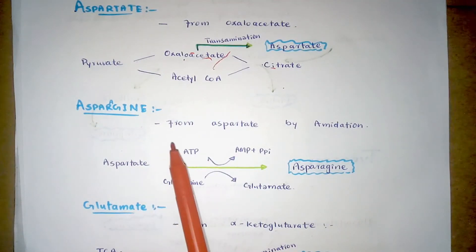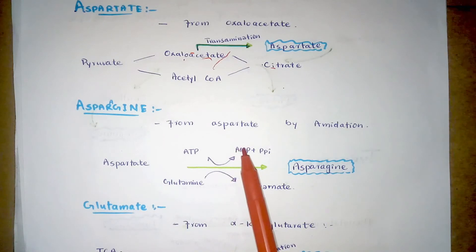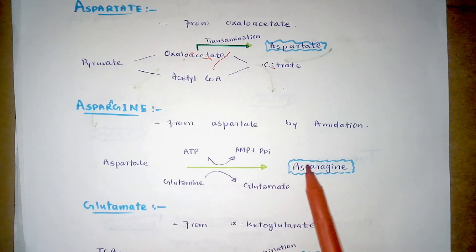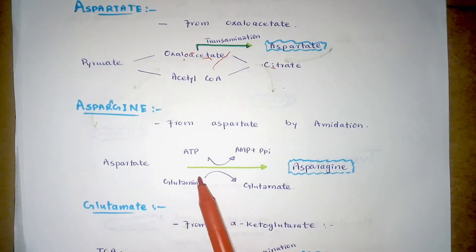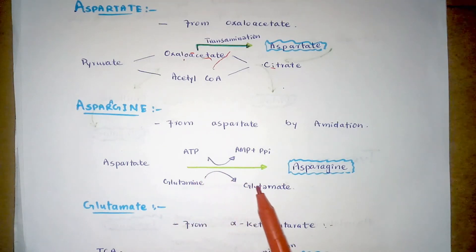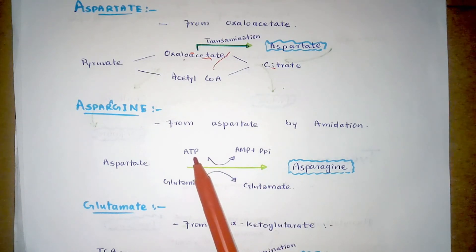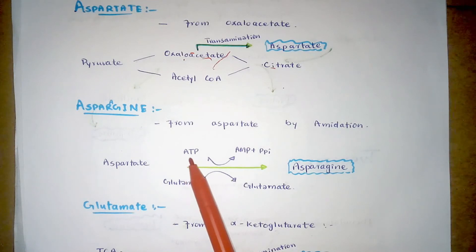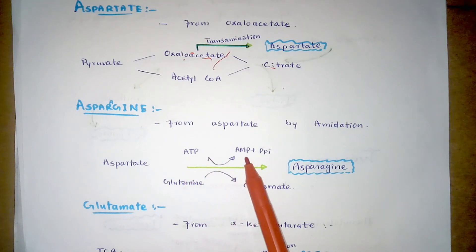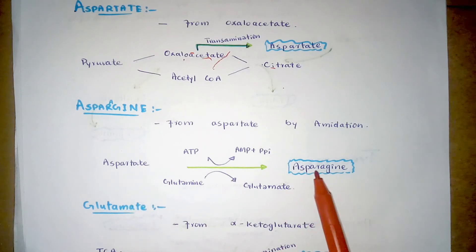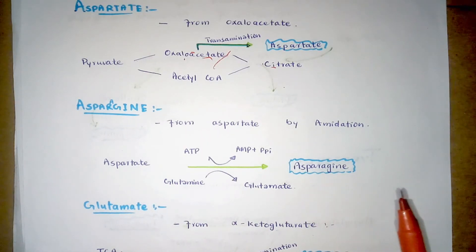Asparagine is produced from aspartate by an amidation reaction. The aspartate is converted to asparagine. In this reaction, glutamine is converted into glutamate with the consumption of ATP, which is transformed from ATP into AMP. This is the reaction step by which aspartate is converted to asparagine.